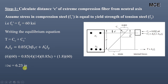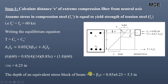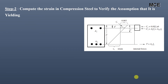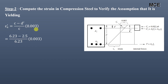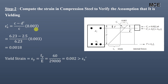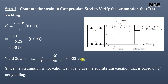Putting values of different quantities in the above equation and solving for C, we get C equals 6.23 inch. The depth of the equivalent stress block is A equals beta1 times C. Since the grade of concrete is 4 KSI, beta1 equals 0.85, which gives A equal to 5.3 inch. Now we compute the strain in the compression steel to verify the assumption. Strain in the compression steel is given as (C minus D') divided by C, times 0.003, which gives εs' equals 0.0018. The yield strain is FY divided by E, that is 60 divided by 29,000, which equals 0.002. Since 0.002 is greater than 0.0018, our assumption is not valid.